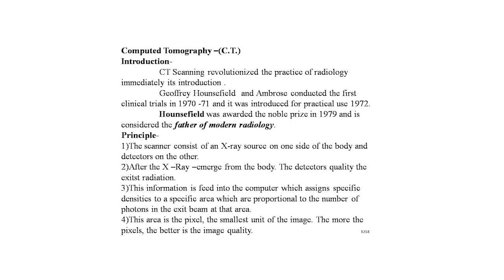Geoffrey Hounsfield and Ambrose conducted the first clinical trials in 1970–71, and CT was introduced for practical use in 1972. Hounsfield was awarded the Nobel Prize in 1979 and is considered the father of modern radiology. The CT scanner consists of an x-ray source on one side of the body and detectors on the other. After x-rays emerge from the body, the detectors quantify the exiting radiation, and this information is fed into a computer which assigns specific densities to specific areas proportional to the number of photons.